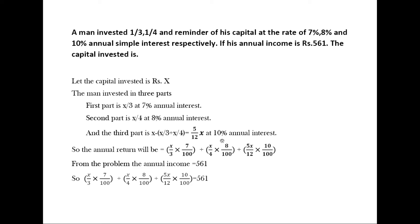So the annual return will be 7% of the first part, that is X by 3 into 7 by 100, plus the second part at 8%, plus the third part, that is 5 by 12 X at 10%.